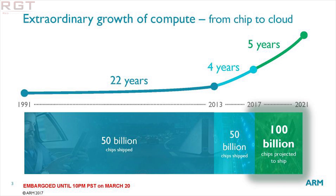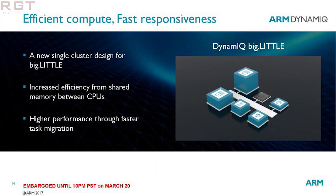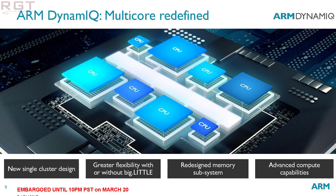For those who don't know, big.LITTLE is simply having two different types of ARM core on the same design, typically pairing them together so you have a high-performance cluster and also a high-efficiency cluster. The idea is that power consumption can be lowered when you're not using a task which requires loads of energy, and of course things can change on a whim.